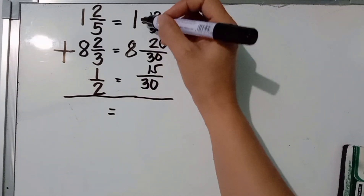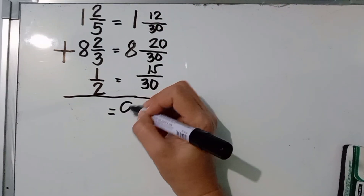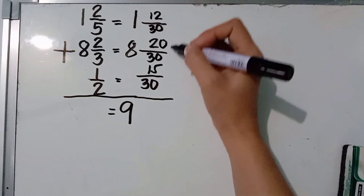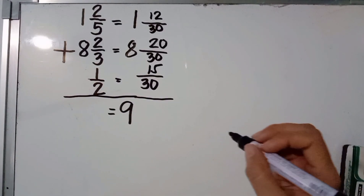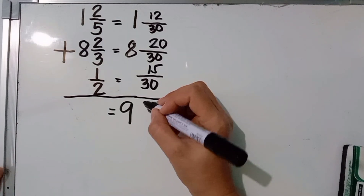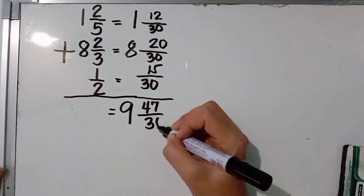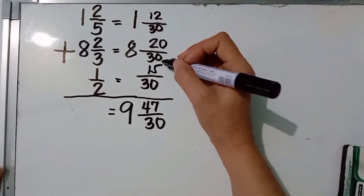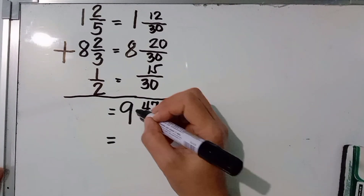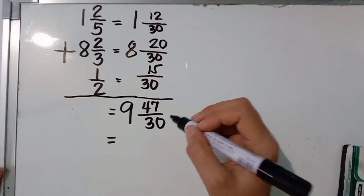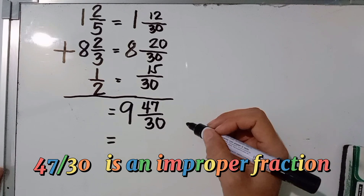Add the whole numbers: 1 plus 8 is 9. Then add the numerators: 12 plus 20 plus 15 equals 47. So we have 47 over 30. Looking at our answer, 9 and 47 over 30 — the fraction 47 over 30 is an improper fraction.